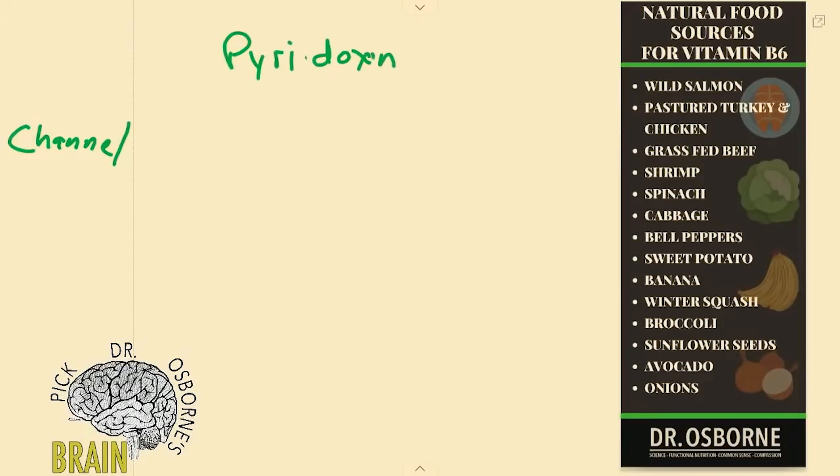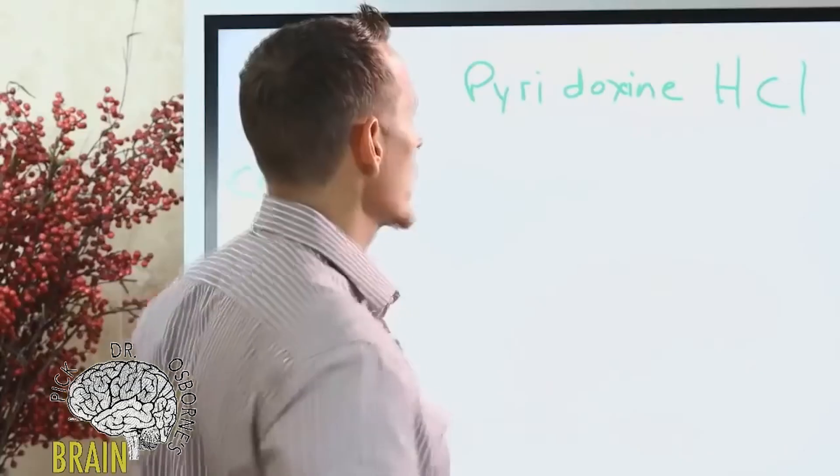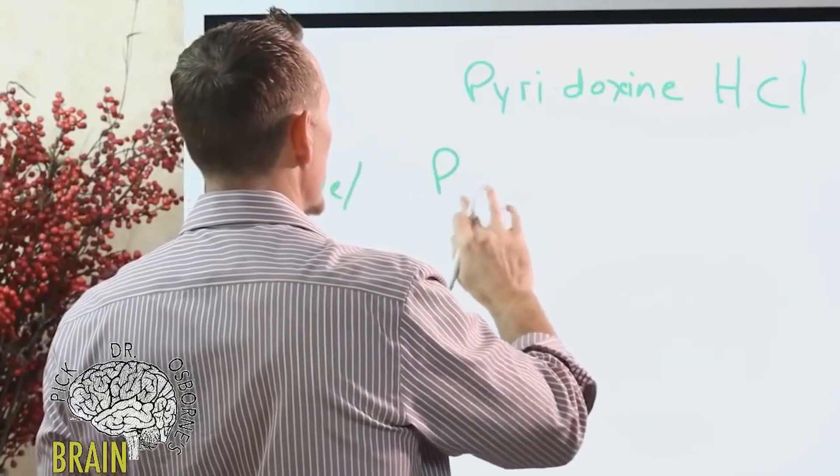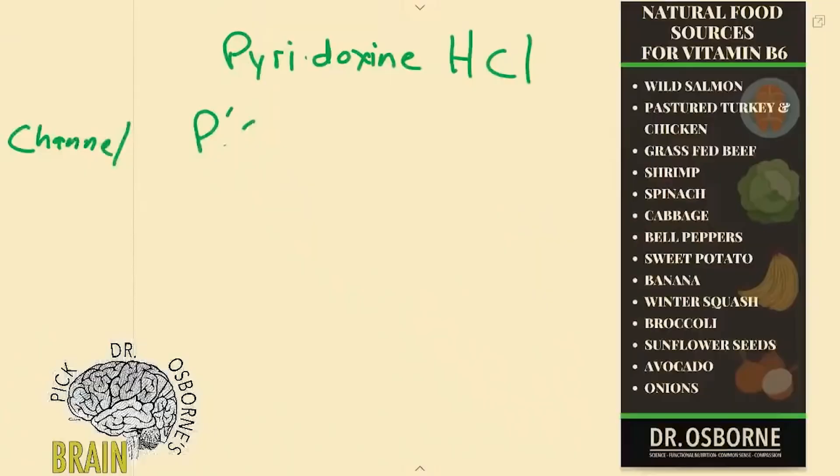There's two major types of B6 and supplements. One's called pyridoxine HCL, that stands for hydrochloride, so pyridoxine hydrochloride. The other one is, we'll just call it P5P, pyridoxine hydrochloride. The other one's called pyridoxine hydrochloride because sometimes it's written out on the label.